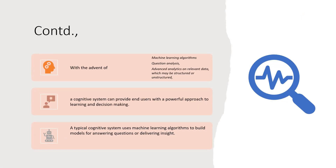With the advent of machine learning, the growth of algorithms has been tremendous. Question analysis has been growing, and advanced analysis on relevant data is also getting better with more algorithms, whether structured or unstructured data. A cognitive system with the growth of all these can provide end users with a very powerful approach to learn and make decisions. It can really support end users to come up with excellent learning, updation and upgrades will happen, and decision making will happen at the best extent. A typical cognitive system uses machine learning algorithms to build models for answering questions or delivering insights — combining NLP, machine learning, and deep learning to get a cognitive system working.